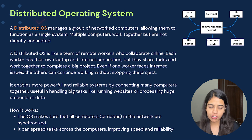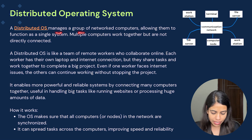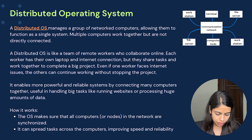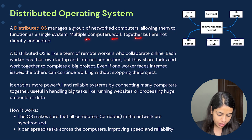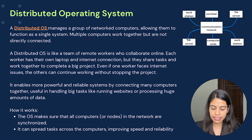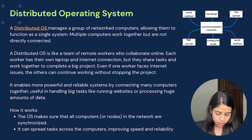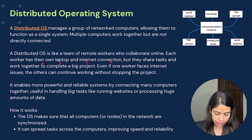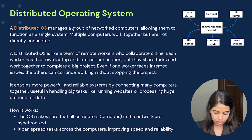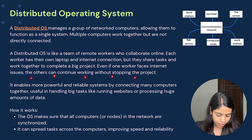So what is a distributed operating system? A distributed operating system manages a group of networked computers, allowing them to function as a single system. Multiple computers work together but are not directly connected. A distributed OS is like a team of remote workers who collaborate online. Each worker has their own laptop and internet connection but they share tasks and work together to complete a big project. Even if one worker faces any internet issues, others can continue working without stopping the project.